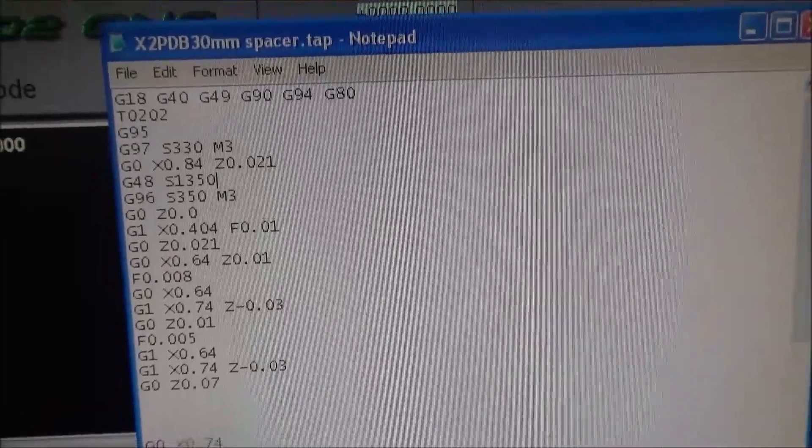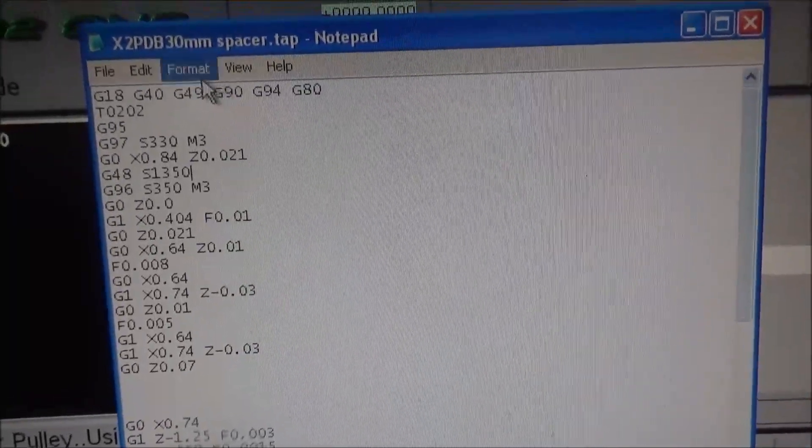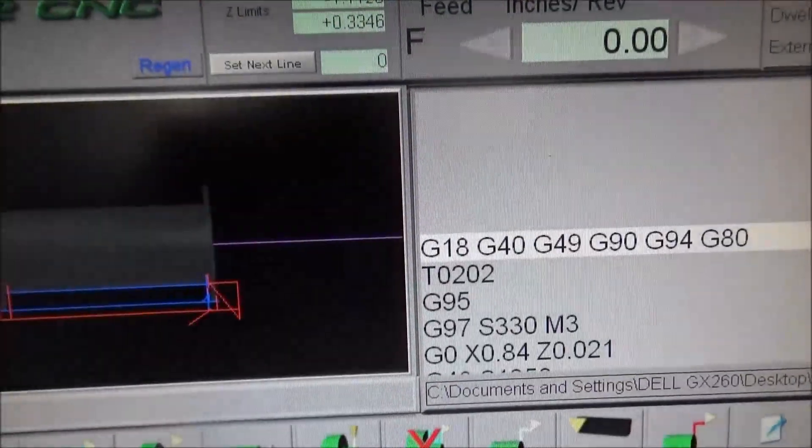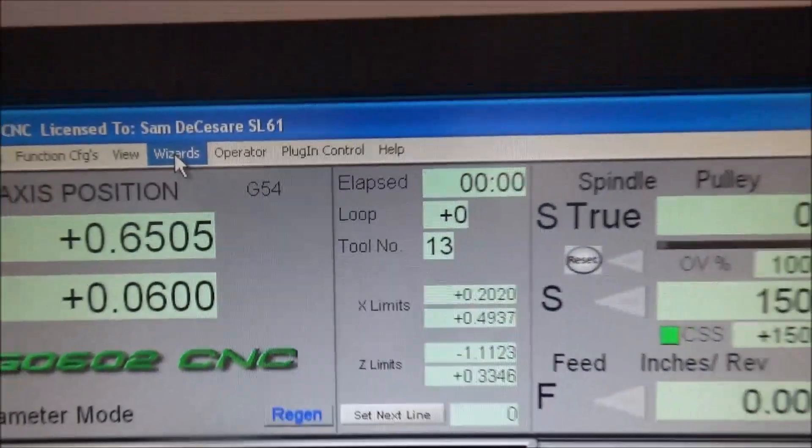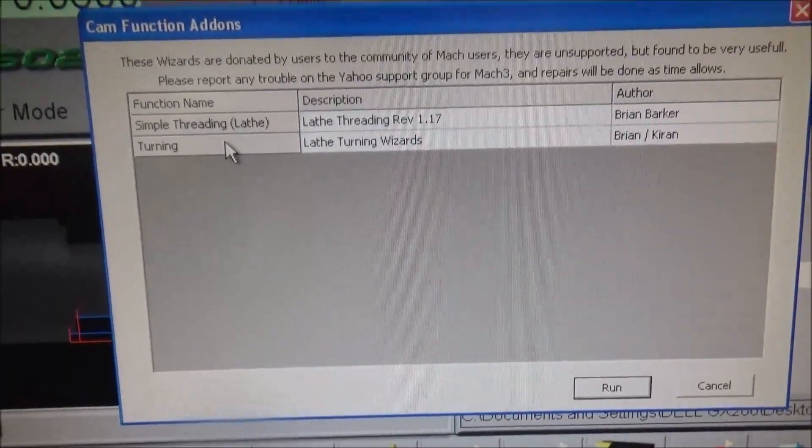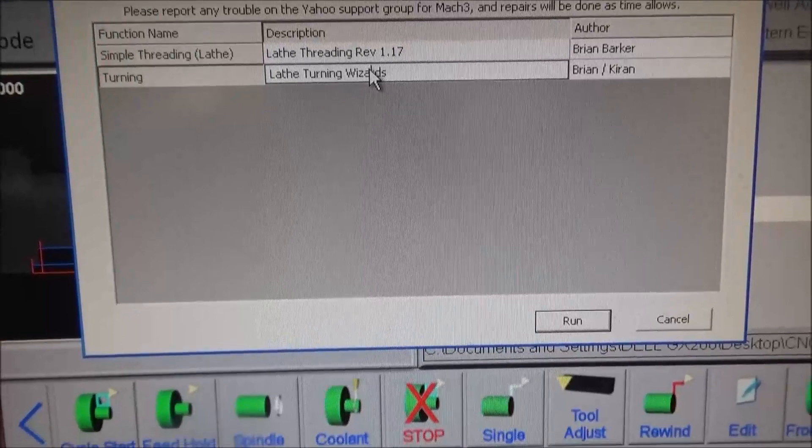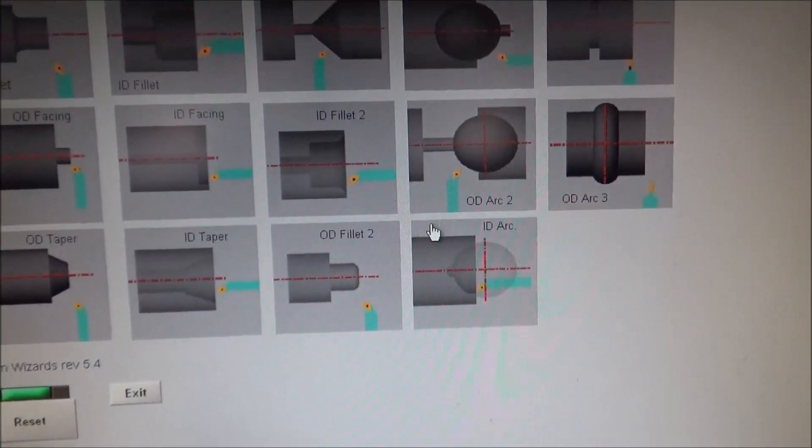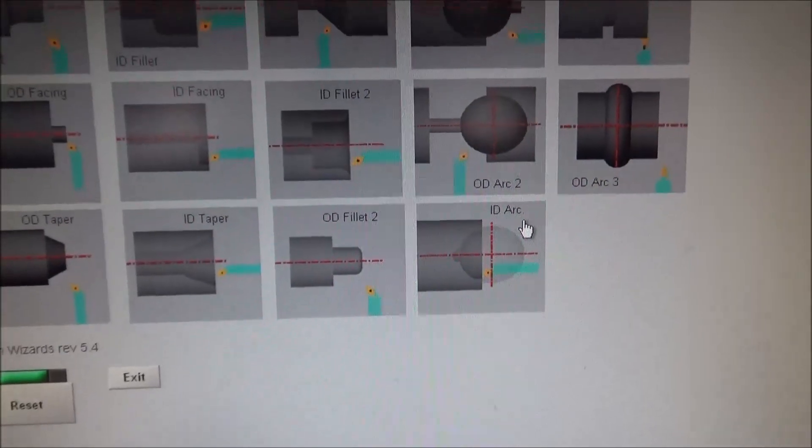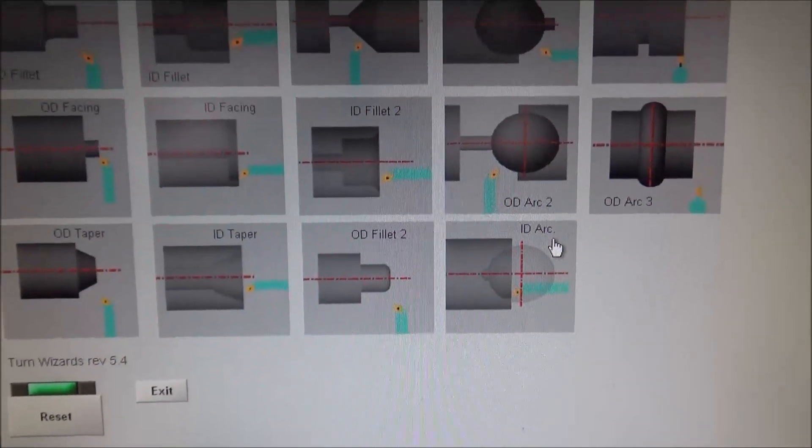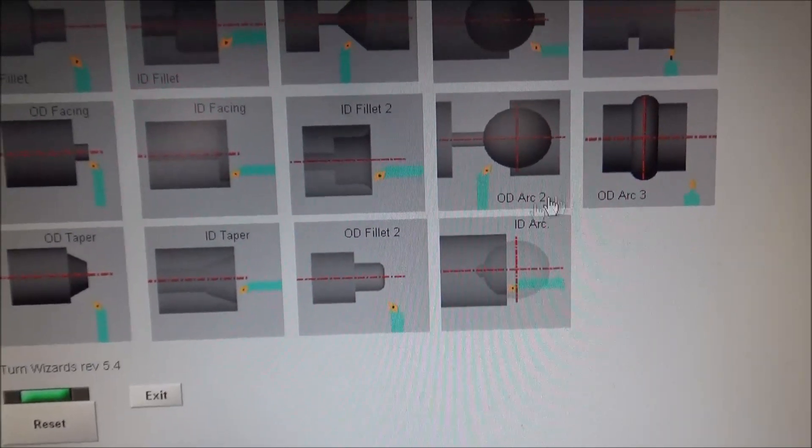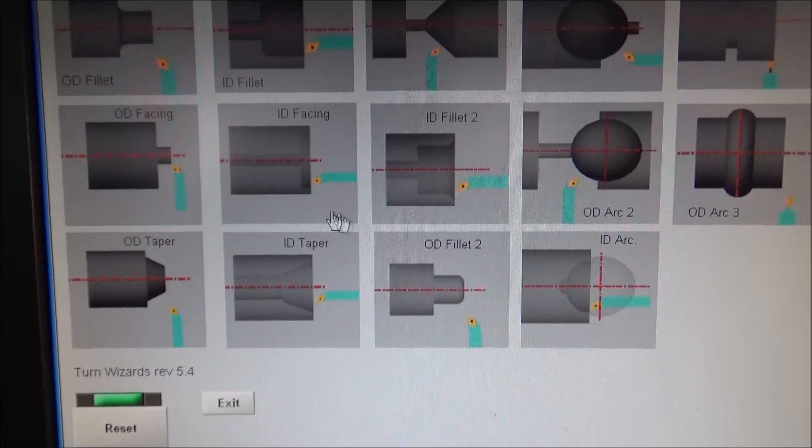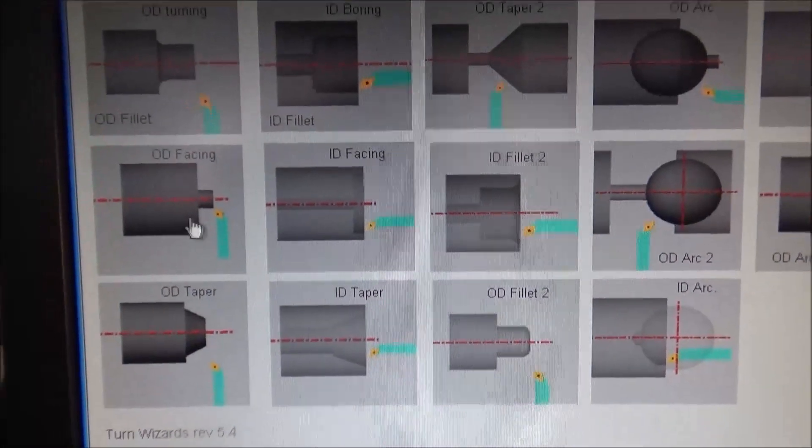But what I did for this was I just went up to the Mach 3 wizards. Let me show you this. Let's go up to wizards, pick a wizard, turning, hit run. And it gives you several different wizards. You can do just about anything. Now, most of the time when you're doing lathe work unless you have some fancy profile, you can get by with just running these wizards. So the first wizard I did was just a facing operation here.